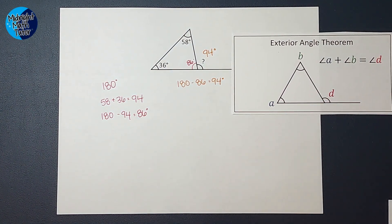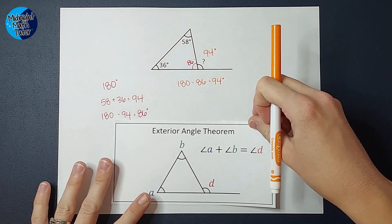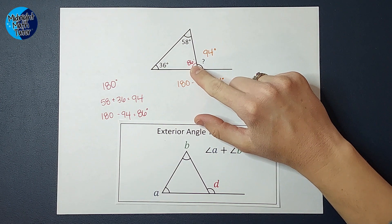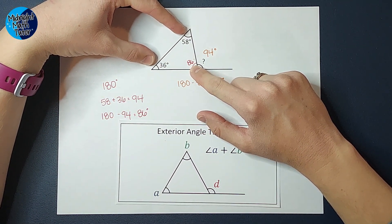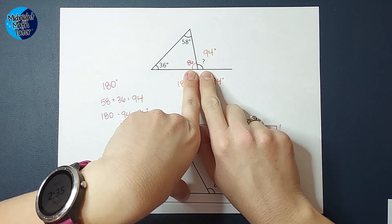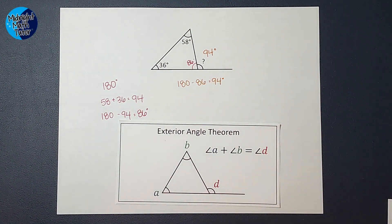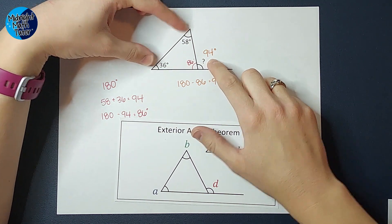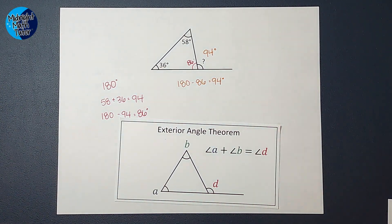So we don't have to do all those steps because the exterior angle theorem just basically does it for us. Because this angle plus these two angles equals 180. And also this angle plus this angle equals 180 degrees. So it would make sense that this angle and these two angles added together equal the same thing.